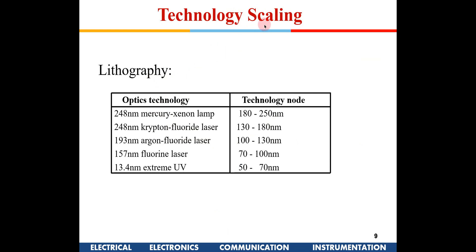What has actually enabled technology scaling is advances in lithography — specifically, how accurately you can make masks and perform ion implantation and diffusion through those masks. Lithography defines the minimum feature size, so advances in lithography have enabled shrinking of devices.